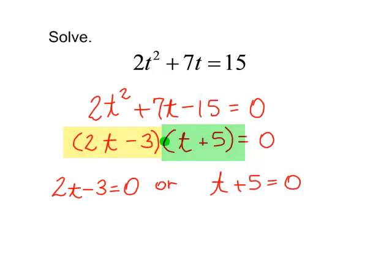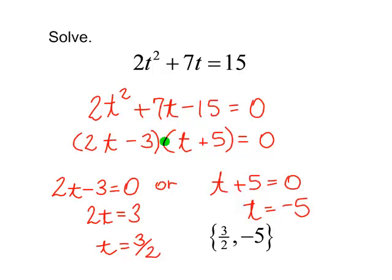Now I need to solve each of these smaller equations. I will add 3 to both sides. And then I will divide by 2. The equation on the right, I will subtract 5 from both sides. My solutions to this quadratic equation are 3 halves and negative 5.